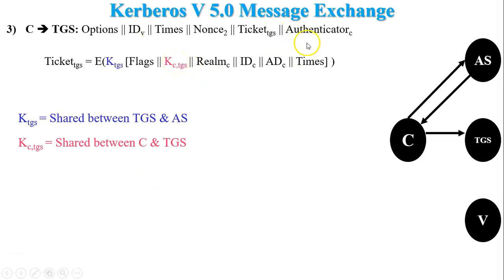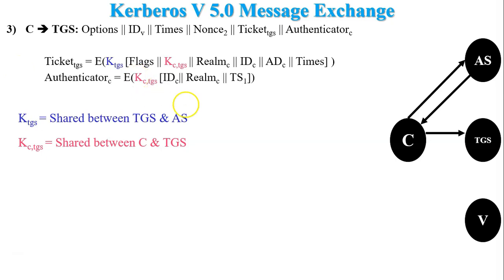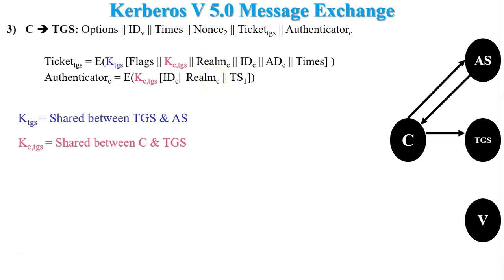The last portion of the request message is Authenticator C. The purpose of Authenticator C is to prove the authentication of the client to the ticket granting server. Authenticator C is also in encrypted form and is decrypted by the ticket granting server using the session key KC-TGS, which was already received from Ticket-TGS. After decryption of Authenticator C, the ticket granting server matches IDC and RealmC with the Ticket-TGS fields. If both are the same, it means the client is authenticated.